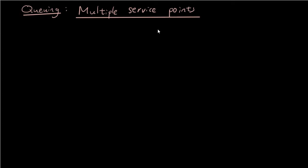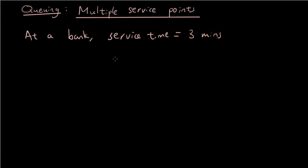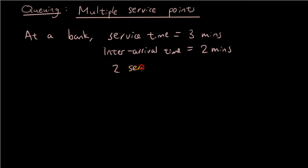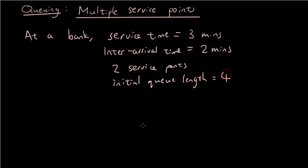Because we have already done it for single service points, I'm just going to do a few quick examples so we won't spend too much time on it. Let's give you a simple situation. At a bank, we're going to have a service time of three minutes and an inter-arrival time of two minutes, and we're going to have two service points. Let's put four people in the queue to start with — initial queue length is four. So let's draw the table for it.